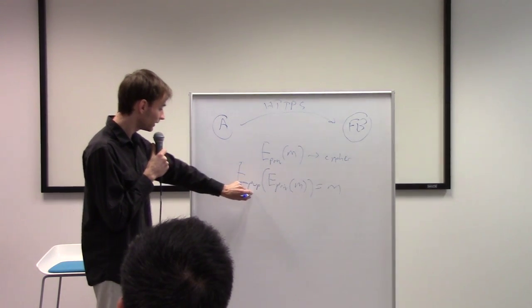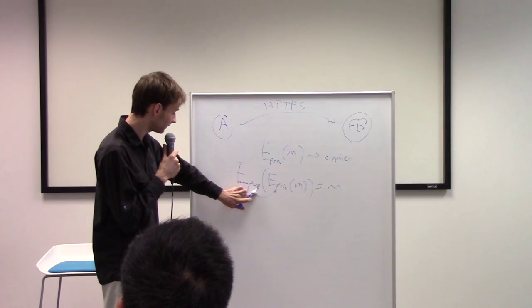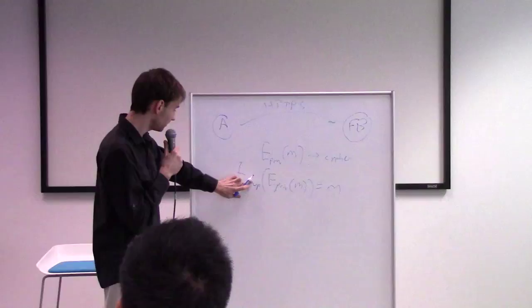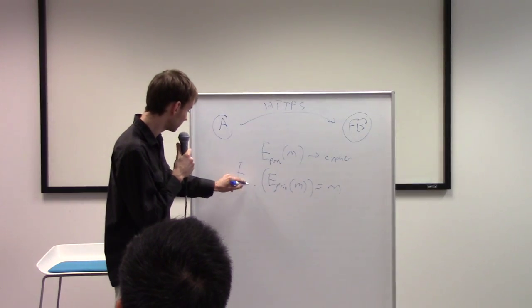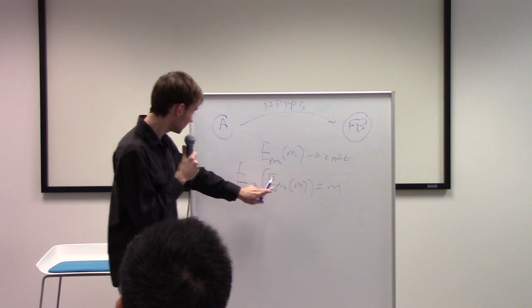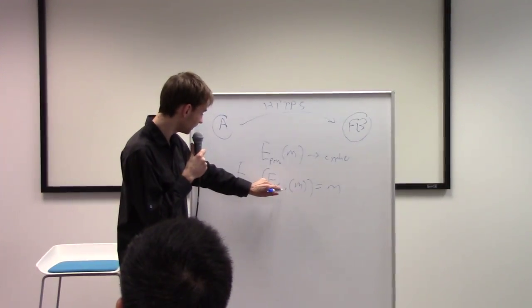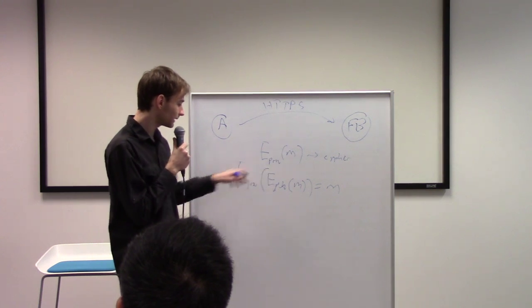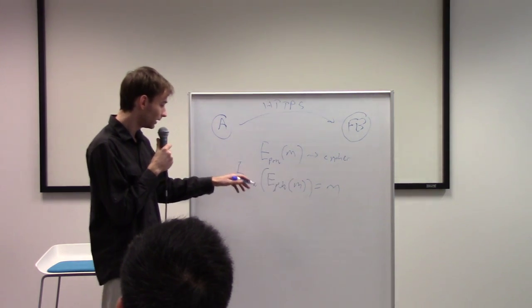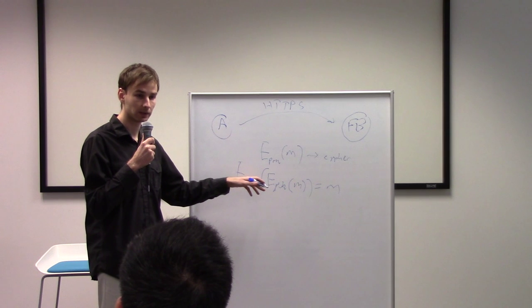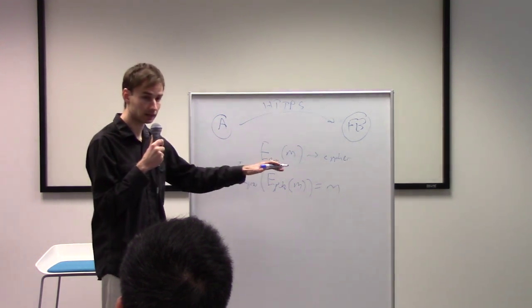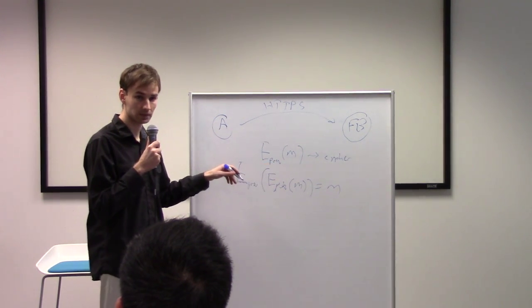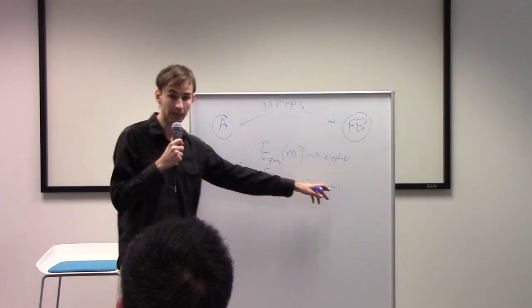You have these functions and you can actually switch these around. This could be the public key, this could be the private, and this could be the public key. It doesn't really matter. These are just two keys. Either way, it has this property that if you have a message and you encrypt one with the private or public key, and then you encrypt that again with its corresponding key, you get back the message again.